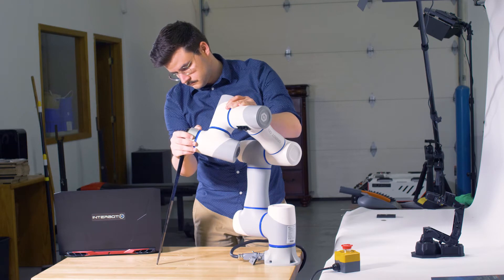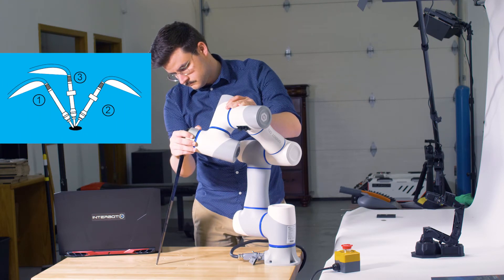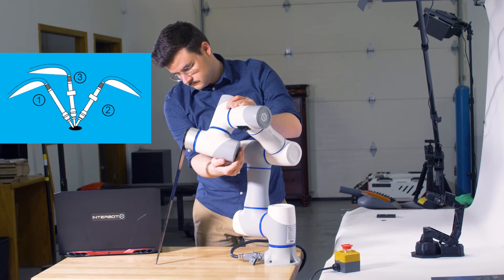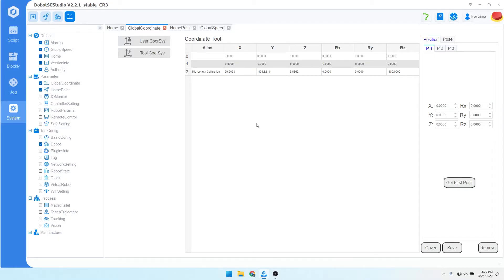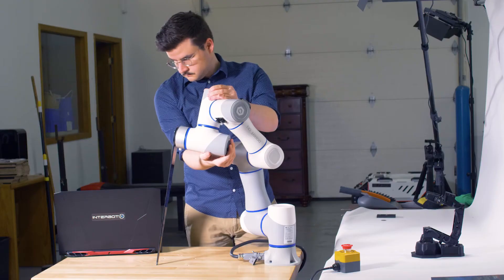We will start with positions. Calibrating the position requires the user to specify three configurations in which the tool's end is in the same position. Move the robot to any three configurations that satisfy that requirement using either the drag function or by jogging the robot.